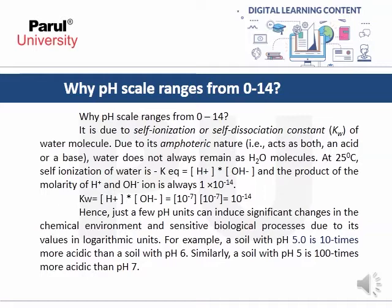Because of its logarithmic nature, just a small change in pH can induce significant changes in the chemical environment and sensitive biological processes. For example, a soil with pH 5 is 10 times more acidic than a soil with pH 6. Similarly, a soil with pH 5 is 100 times more acidic than a soil with pH 7.